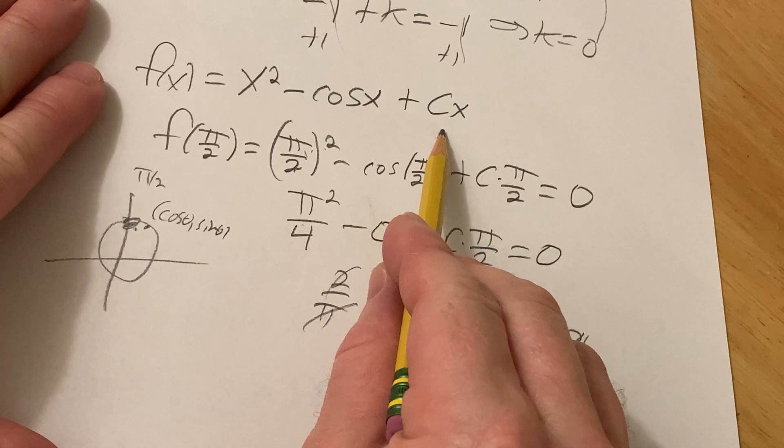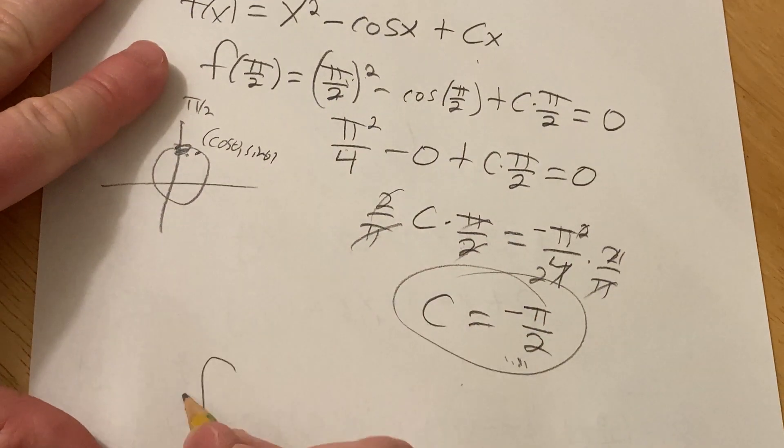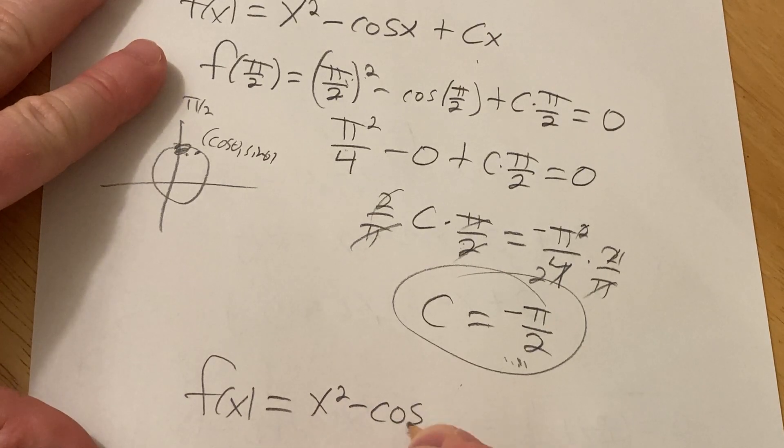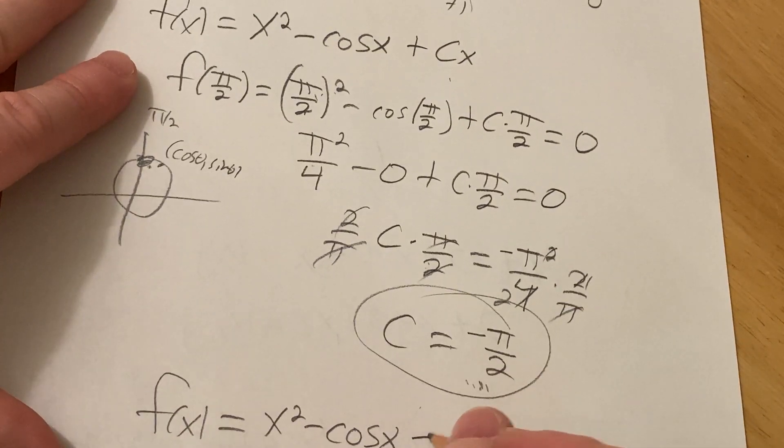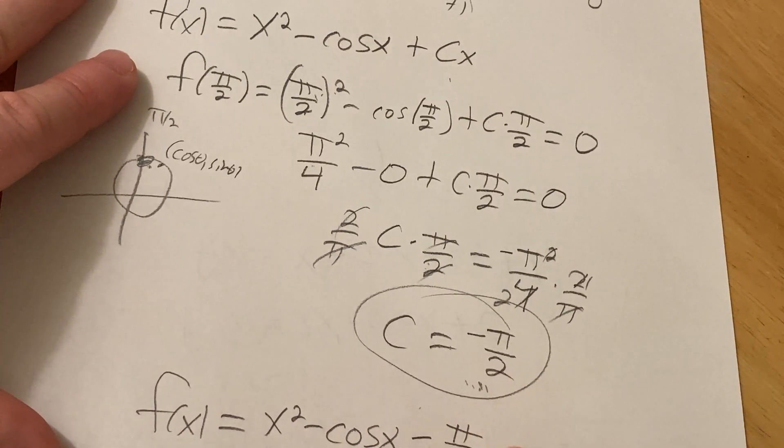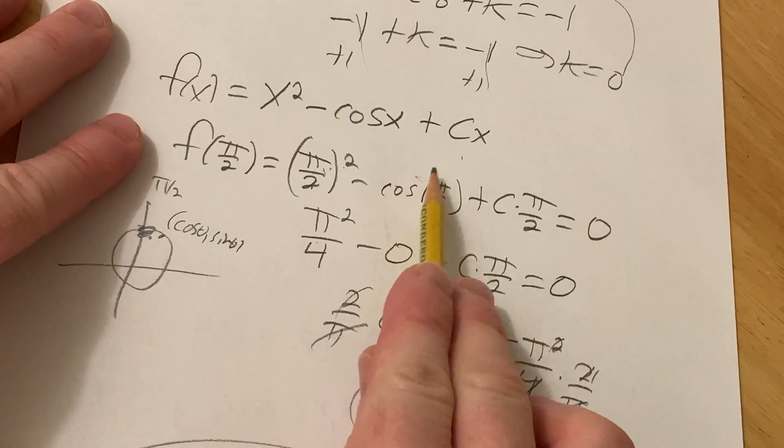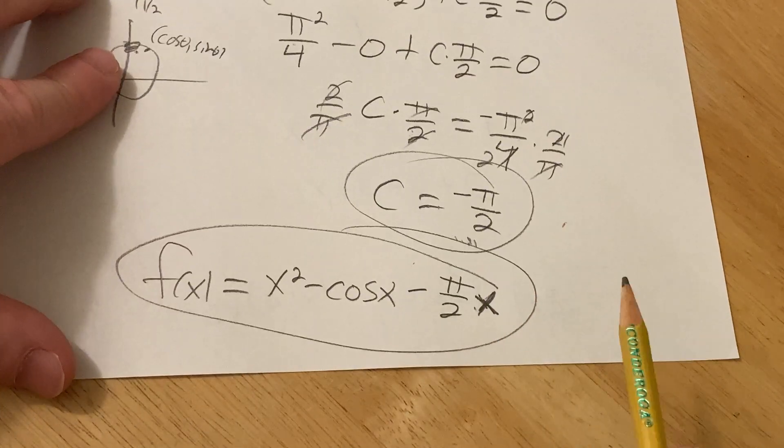So, now we just take this and plug it back into this. So, the final answer will be f of x equals x squared minus cosine x minus pi over 2 times x. And that'll be it. Right? Just putting the minus pi over 2 where the c is.